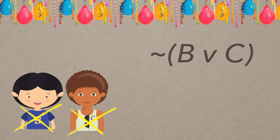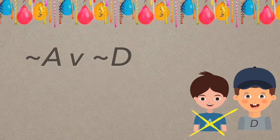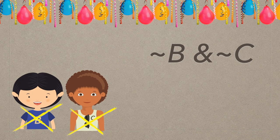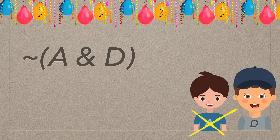Let's close with a rapid fire review. Neither Betty nor Carla is going to the party. Either Alex is not going to the party or David is not going. Both Betty and Carla are not going to the party. Alex and David are not both going — so you might see one at the party or you might see the other, but not both.